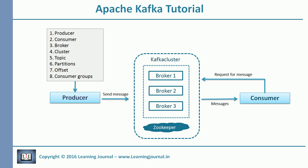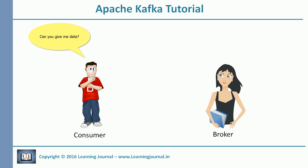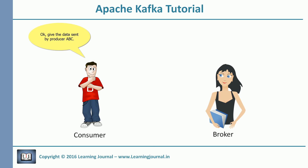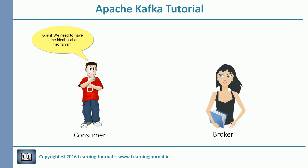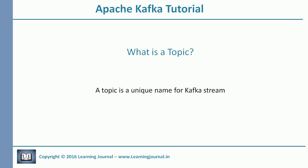The next item is the topic. We learned that producers send data to the Kafka broker, and consumers can ask for data from it. But which data? The broker is collecting data from multiple producers, so we need some identification mechanism. The topic is a unique name given to a data stream. For example, we create a topic called 'global orders', and every point of sale may have a producer. Each of them sends their order details as a message to that single topic, and a subscriber interested in orders can subscribe to it.